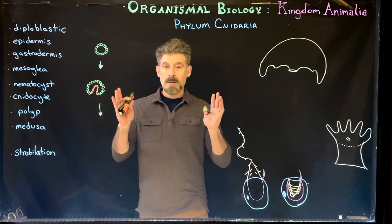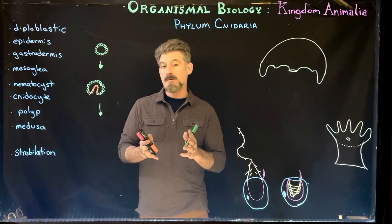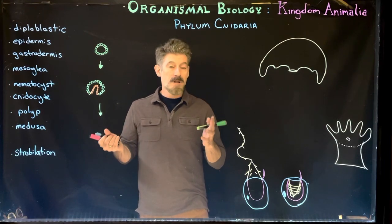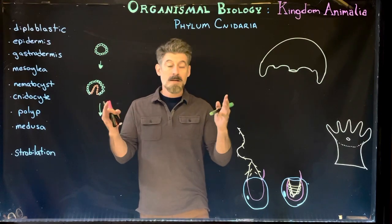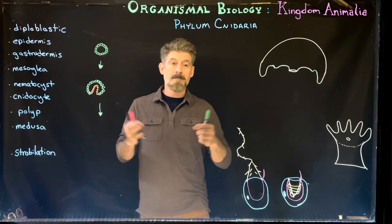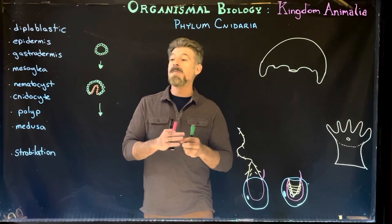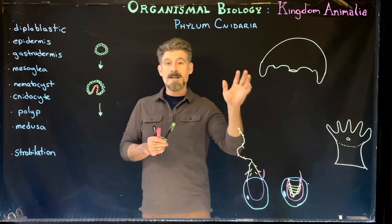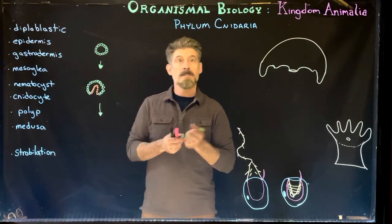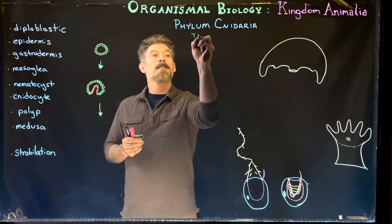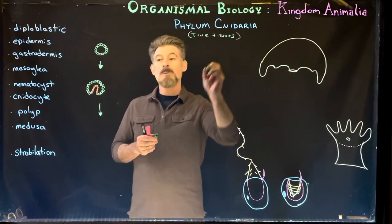We're going to move on now. We had the Porifera, the sponges, as our first group of animals, but they had no true tissues. They're a group of animals that develops cell layers of distinct cells but lacks the connections between the cells required for tissue formation. So this group now — the phylum Cnidaria — is going to be our first group of animals that actually has true tissues.